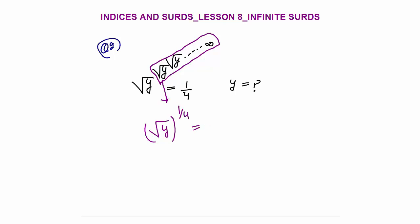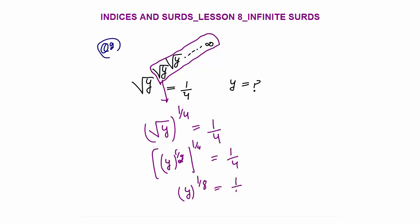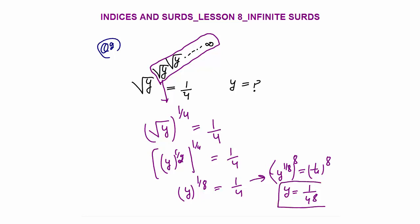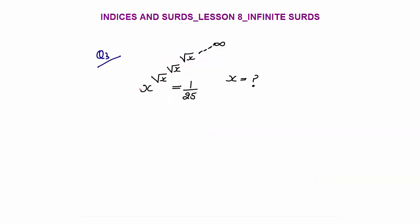So: √y raised to the power (1/4) = 1/4. Since √y = y^(1/2), this becomes y^(1/2 × 1/4) = y^(1/8) = 1/4. Taking the power of 8 on both sides: y = (1/4)^8. That is our final answer for question 2.